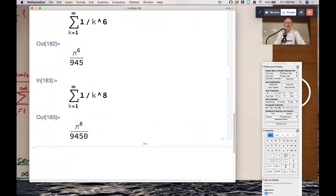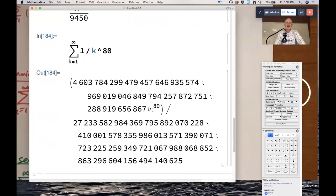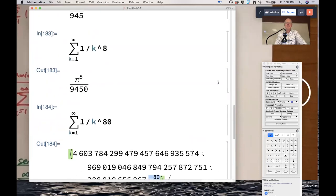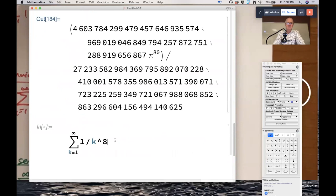It even works if it were like an 80th power down there. Look, there's a pi to the 80th in there. Why do I keep choosing even numbers? Because if you choose an odd number, it doesn't work so nice.